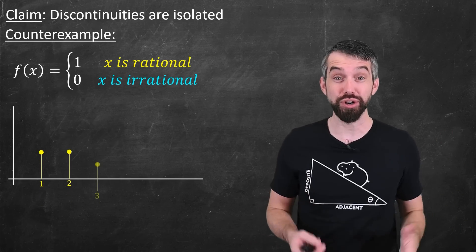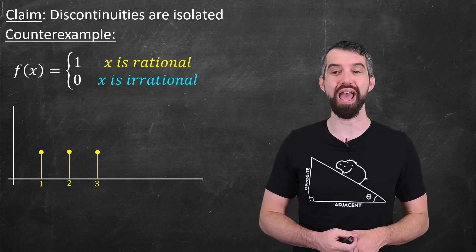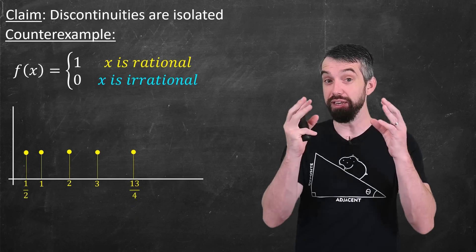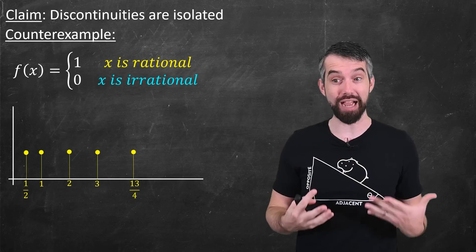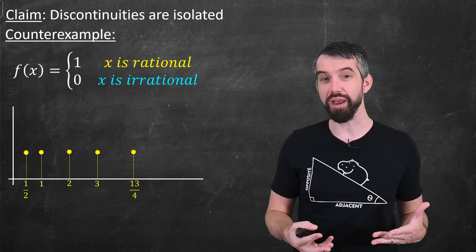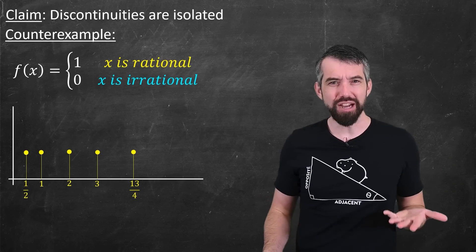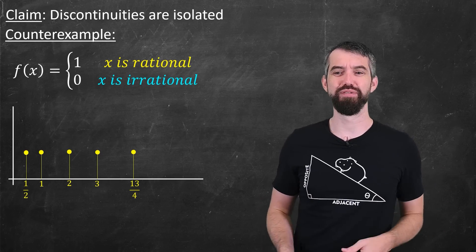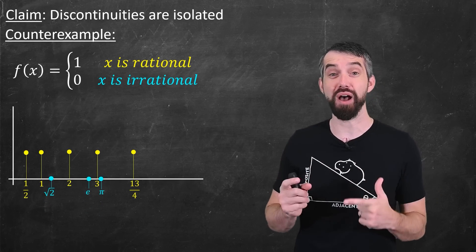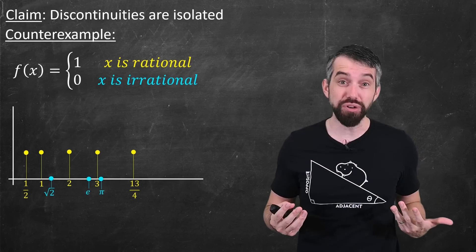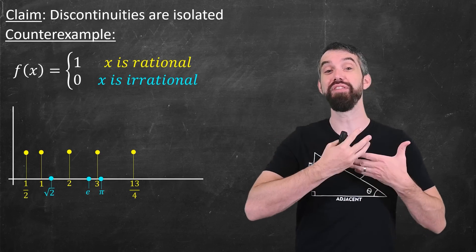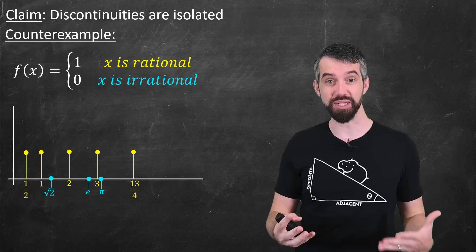For rational numbers like 1, 2, and 3 — which are integers — but also for numbers like 1/2 or 13/4, anything that can be written as an integer divided by an integer is a rational number, and for all of those the value of the function is 1. But irrational numbers — some favorites are √2, e, and π — for all of those the value is 0. Irrational numbers can't be written as an integer divided by an integer; they have an infinite non-repeating decimal expansion.